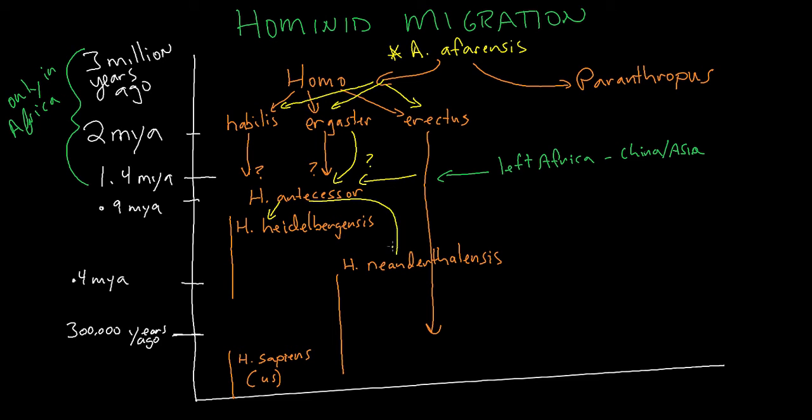And then one of those, Ergaster or Erectus possibly, led to antecessor, which might have led to Heidelbergensis, which then might have divided into both Homo sapiens in one branch and Neanderthal in the other branch. But, you know, there's lots of gaps here too.